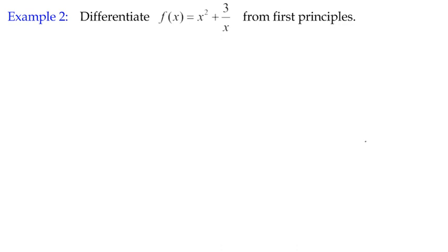And for that, we have been using this formula: f dash x, f prime x, is equal to the limit as h tends to 0 of this fraction. We've got f of x plus h minus f of x all over h. Remember, this isn't some mystical formula - this is the simplified version of the gradient formula for any function.